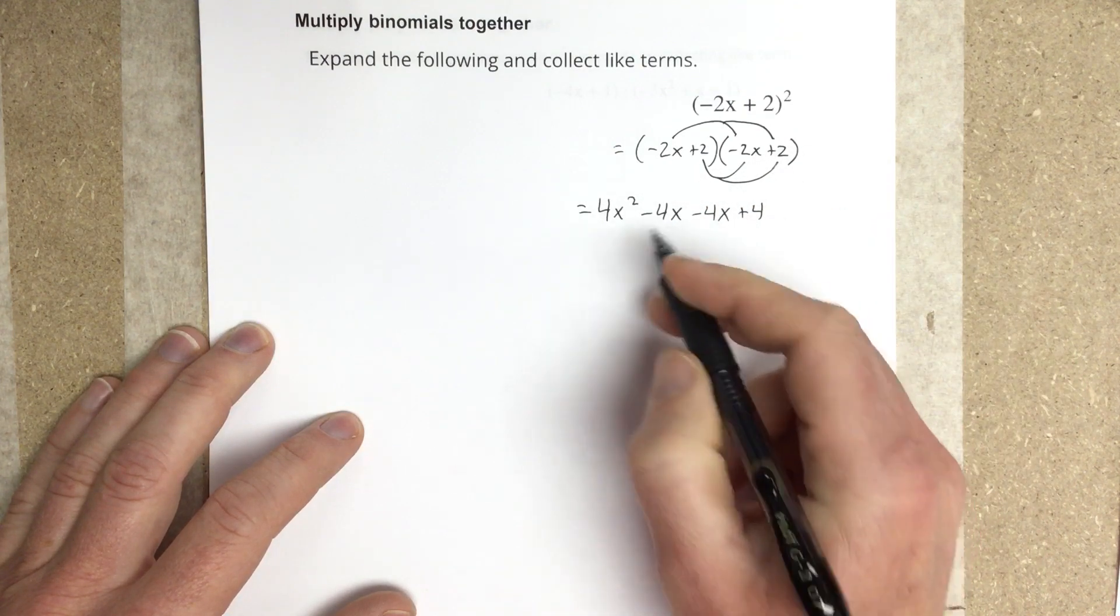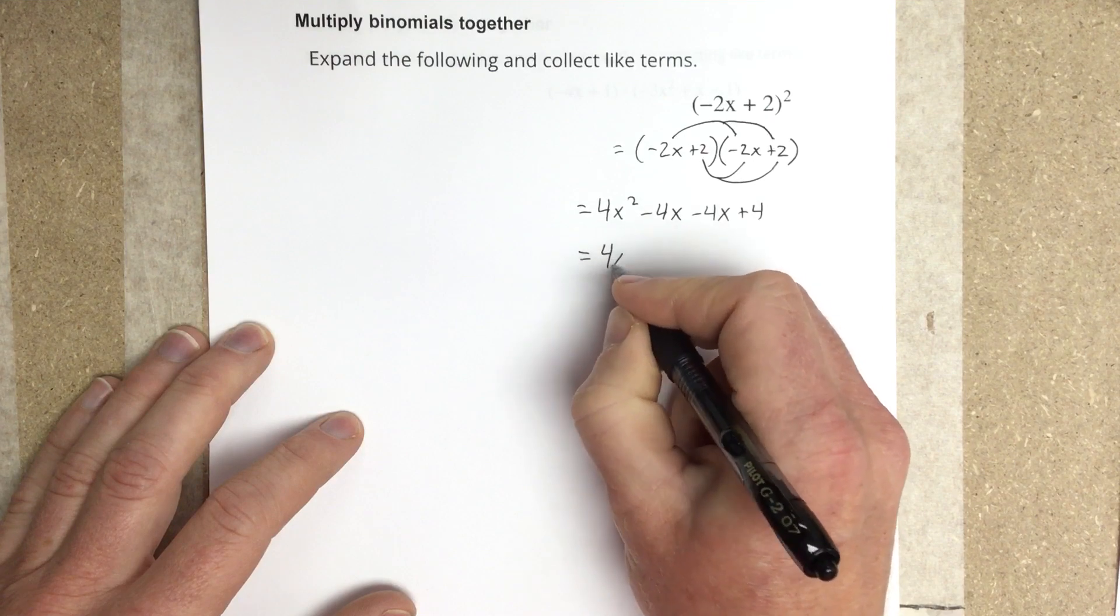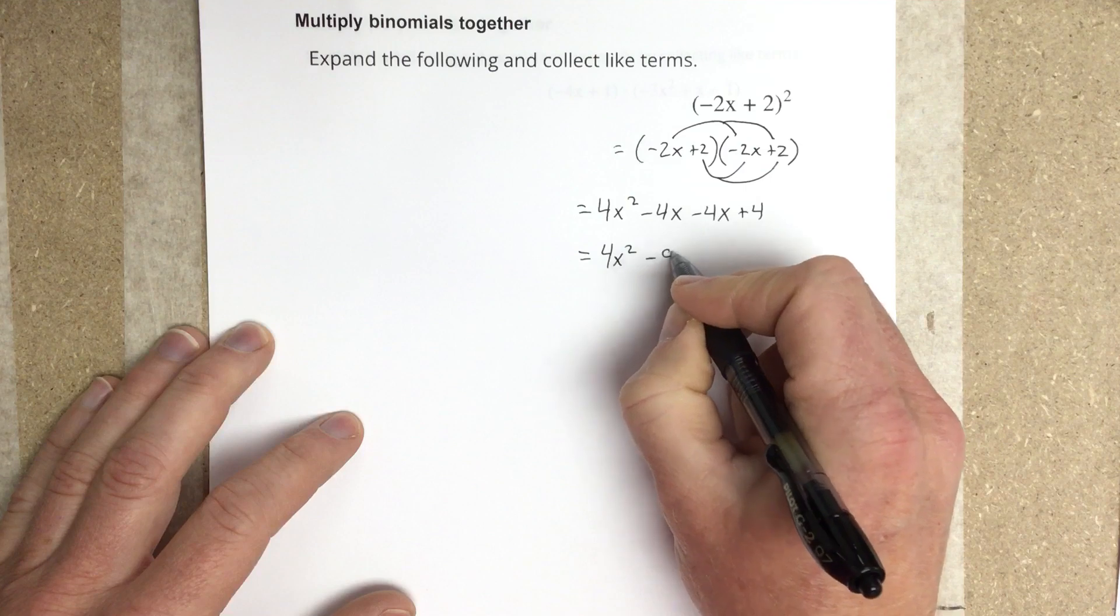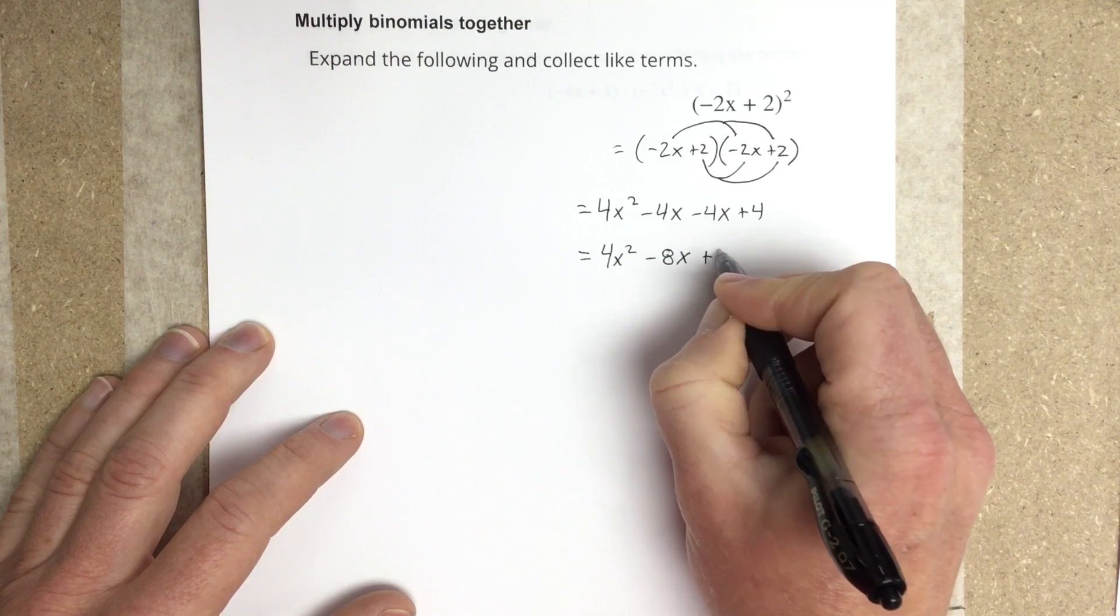So we combine the like terms in the middle, and we end up with 4x squared. If we have minus 4x minus 4x again, that's subtracting 8x plus 4.